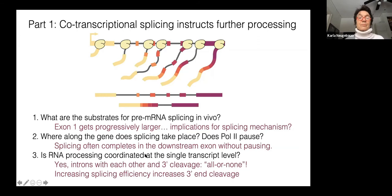Where along the gene does splicing take place? Does PAL pause? This has been a controversial theme in the field. What our data is telling us is that splicing often completes when the polymerase is in the downstream exon and that pausing, transcriptional pausing, is not involved. Is RNA processing coordinated at the single transcript level? The fact that we see introns correlated, their removal correlated with each other and also correlated with three prime end cleavage, really does point to the possibility that transcripts are marked to be either efficiently or inefficiently spliced for presumably some physiological reason.